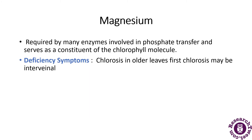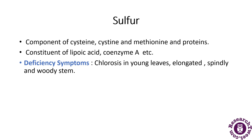Magnesium is required by many enzymes; it is involved in phosphate transfer and serves as a constituent of the chlorophyll molecule. When magnesium is deficient, there is chlorosis in the old leaves, which may first appear as interveinal chlorosis. Sulphur is a component of cysteine, methionine, and proteins, and is also a constituent of lipoic acid and coenzyme A. The deficiency symptom of sulphur is chlorosis in the young leaves along with elongated, spindly, and woody stems.